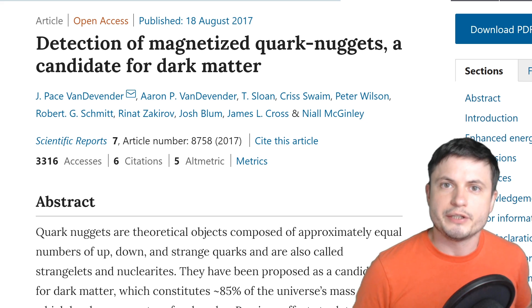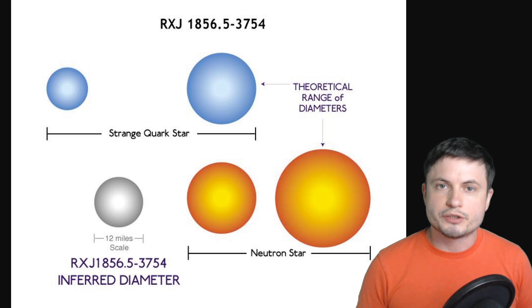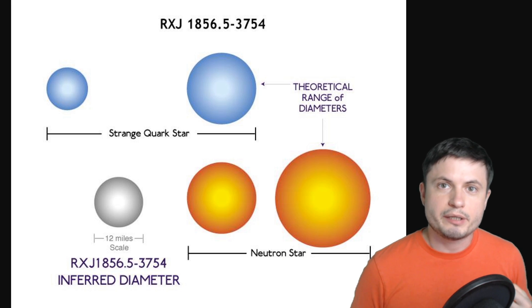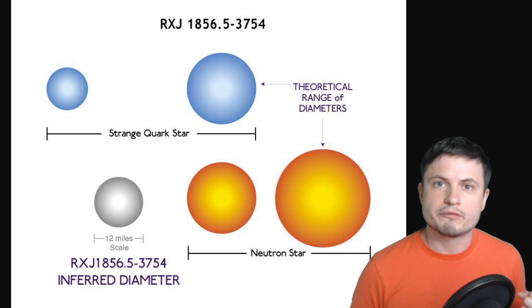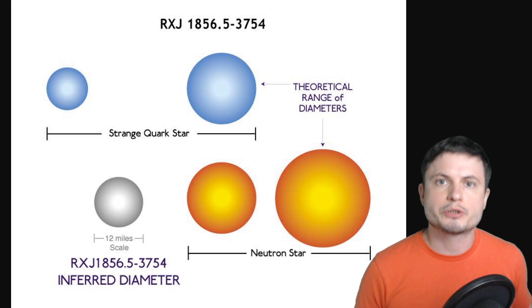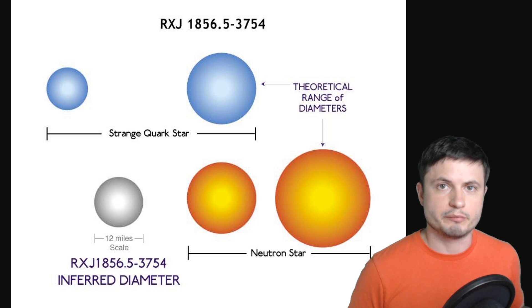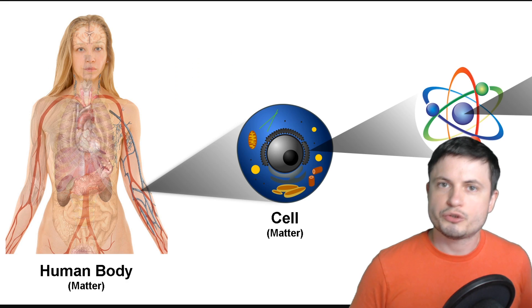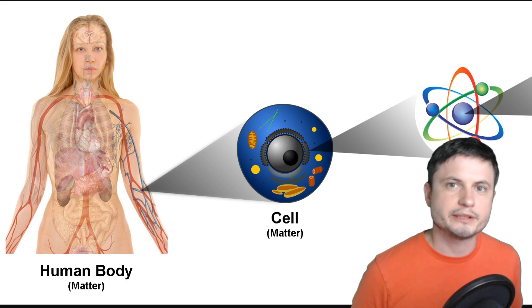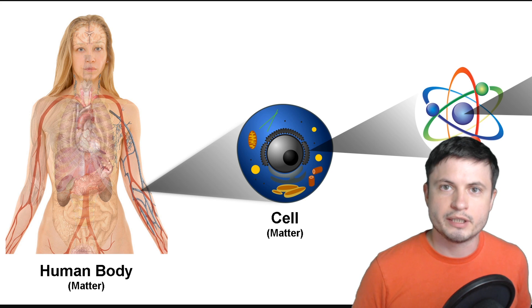There are quite a lot of theories investigating different potential detections and origins of this mysterious matter. Some involve all kinds of exotic particles, but this particular theory I wanted to look at today focuses on dark matter being made out of so-called strange matter, also known as strange star matter. To understand all of this, let's quickly take a look at what we are made out of.